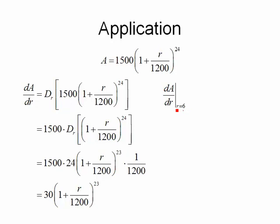What I'm going to do is take what we came up with before, and I'm going to put 6 into it. So I'm going to get 30 times the quantity 1 plus 6 over 1,200, that quantity raised to the 23rd power. I'll go ahead and put that into my calculator and calculate it. And what I get is 33.65.